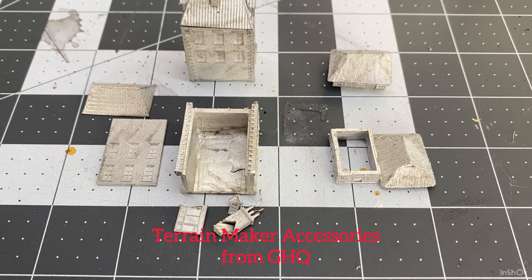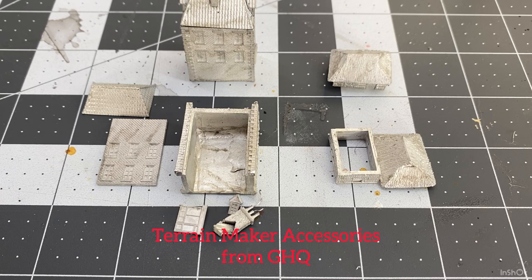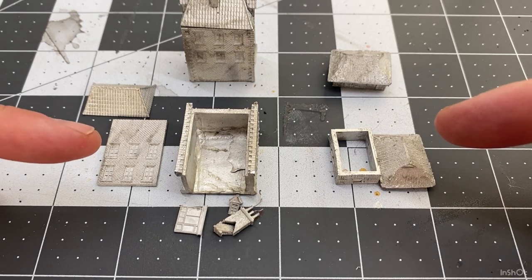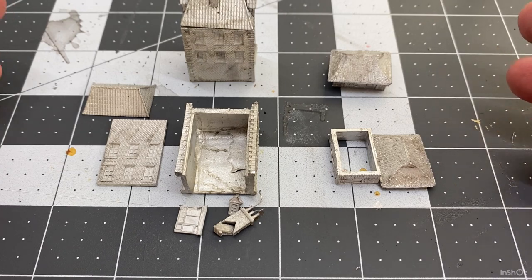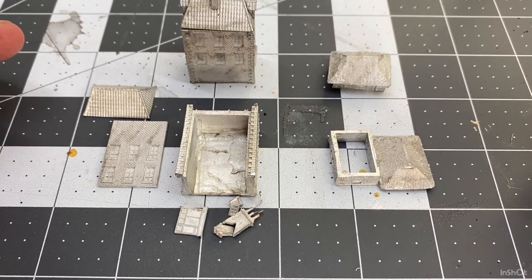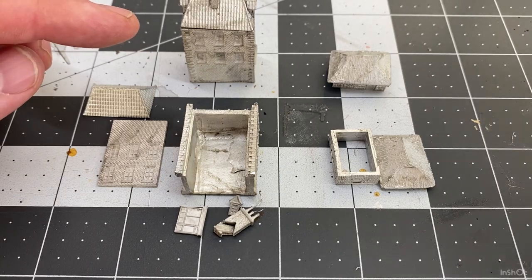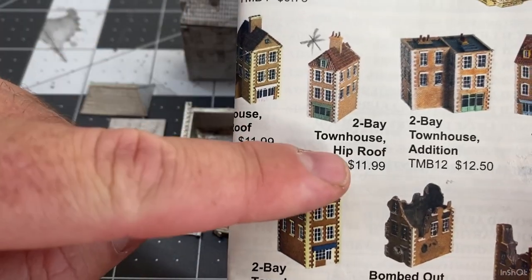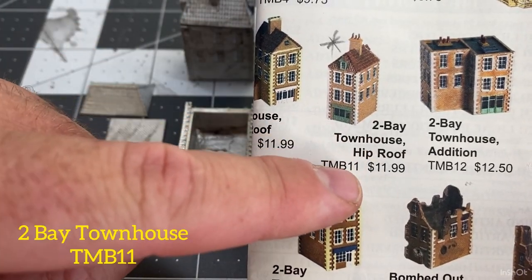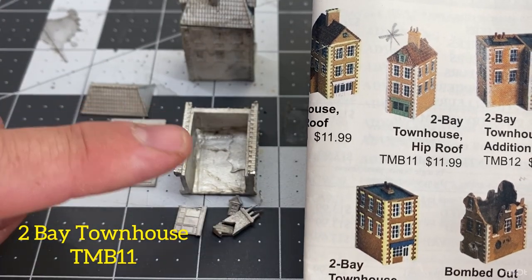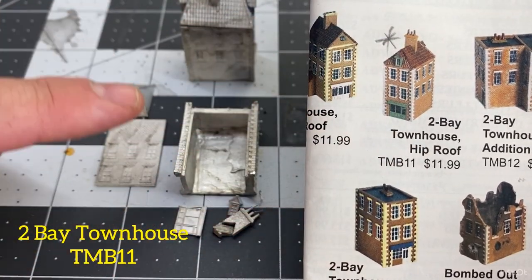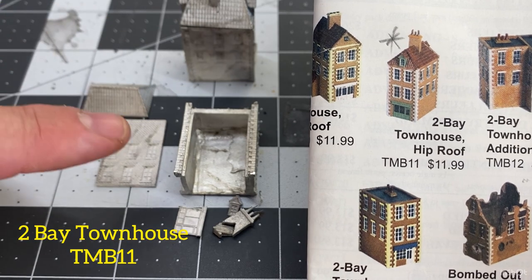Thanks for having a look at today's video. Today we're continuing on with that GHQ 1-285 or 6mm scale buildings that we've been doing that we unboxed in the previous GHQ video. On the left here we've got that two bay townhouse, and this is it here - the two bay townhouse with the hip roof.